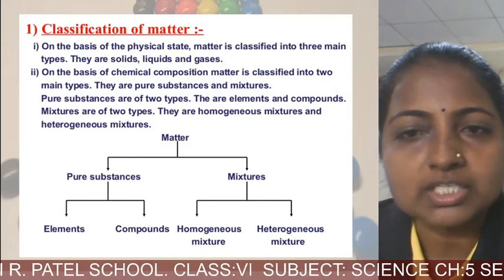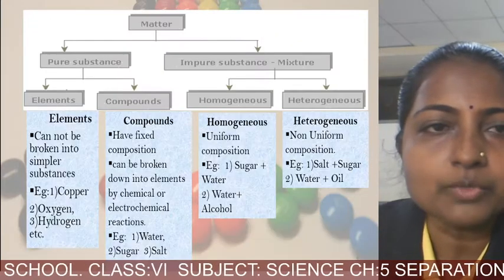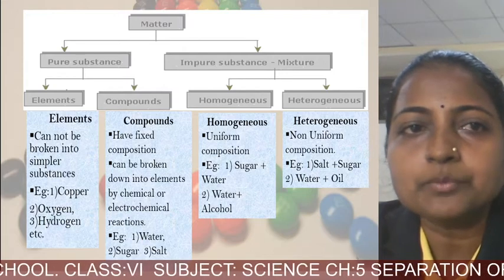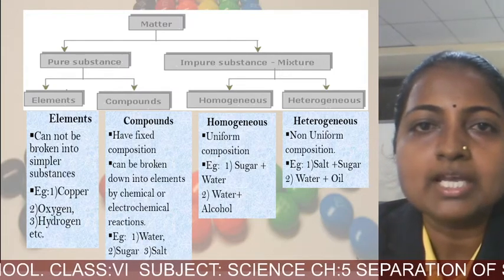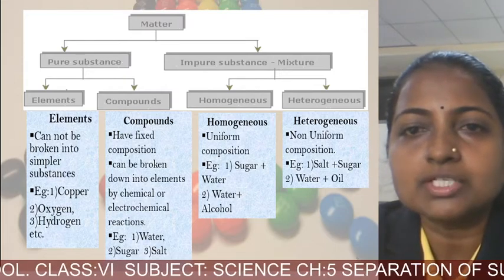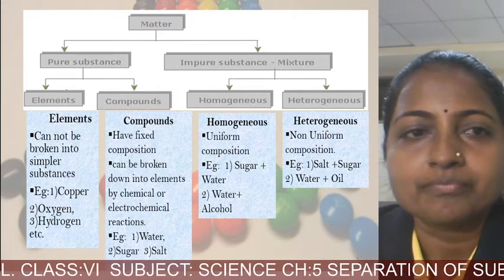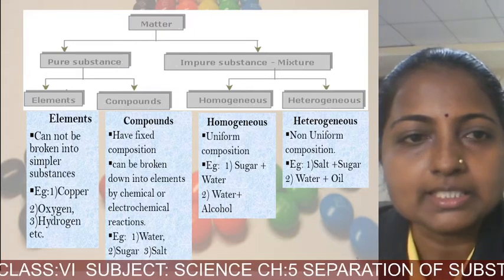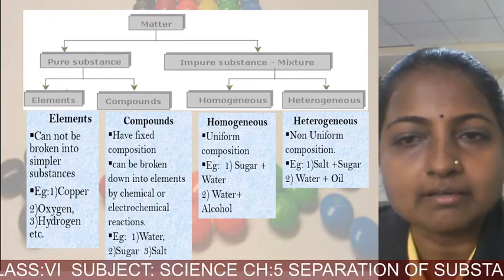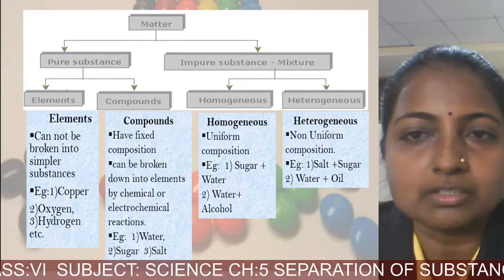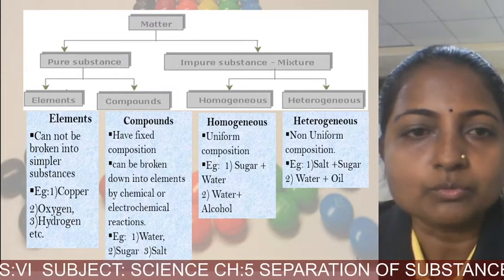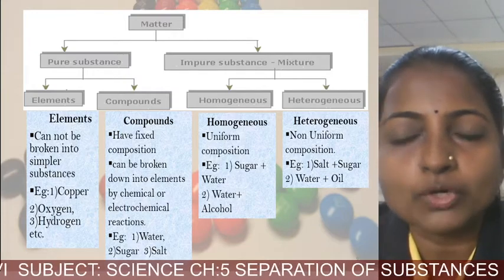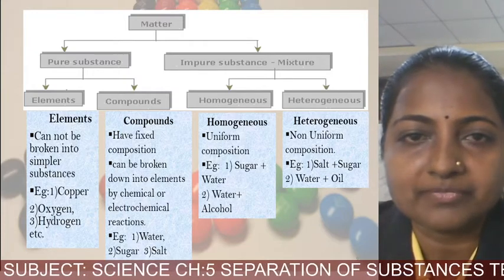In the flowchart, matter is classified into pure substance and mixture. Pure substance is further classified into elements and compounds; mixture is classified into homogeneous and heterogeneous. Elements cannot be broken down into simpler substances — examples are copper, oxygen, and hydrogen. Compounds have a fixed composition and can be broken down into elements by chemical or electrochemical reactions — examples are water, sugar, and salt.